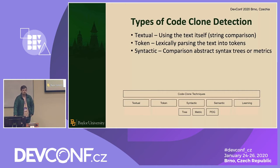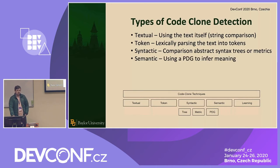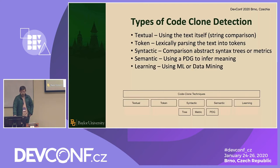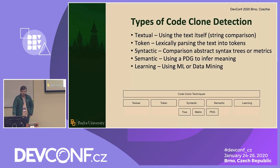Syntactic is another approach, typically using abstract syntax trees. Another way is metrics-based — taking the form of counting up the number of if statements, variables, and seeing how similar they are. Even though this is called semantic and Type 4 is also called semantic, these can be used to find all different types of clones. Semantic comparison uses something like a program dependency graph to infer the meaning behind the code. Modern machine learning and data mining techniques will also help find code clones, though these have only recently started to hit the accuracy of other forms.